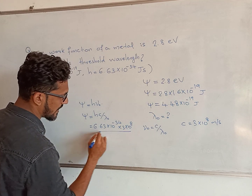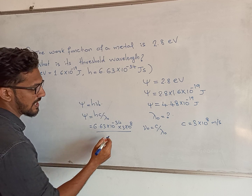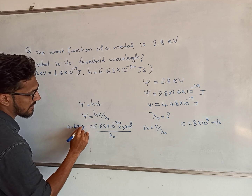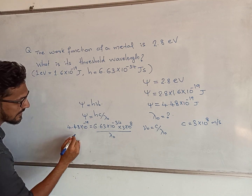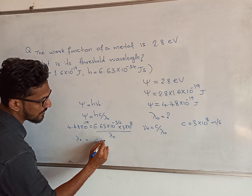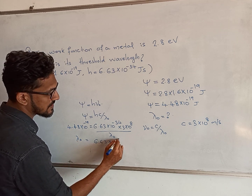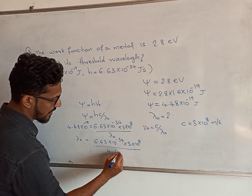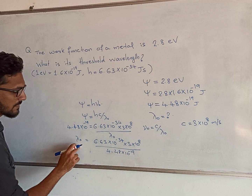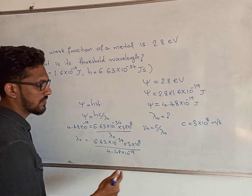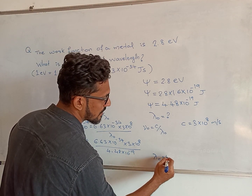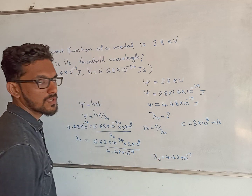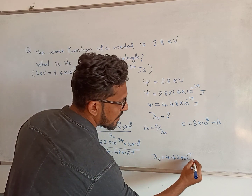Using c equals 3 into 10 raised to 8 divided by lambda 0, we get lambda 0 equal to 6.63 into 10 raised to minus 34 into 3 into 10 raised to 8, divided by 4.48 into 10 raised to minus 19. Calculating this, lambda 0 is equal to 4.43 into 10 raised to minus 7 meters, which is the threshold wavelength.